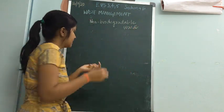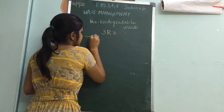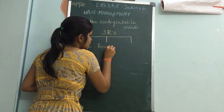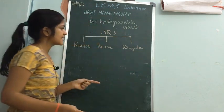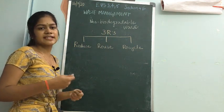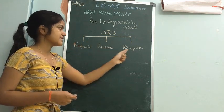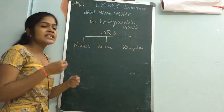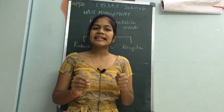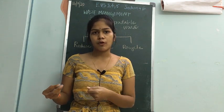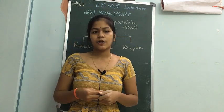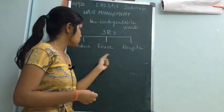For non-biodegradable waste, there are three R's: Reduce, Reuse, and Recycle. Non-biodegradable waste cannot easily mix into the soil and causes environmental pollution, so these three R's help manage it. Reduce means reducing the production and use of non-biodegradable waste. For example, instead of using polythene bags when shopping for groceries or fruits and vegetables, you can carry your own cotton bag or jute bag to reduce the use of polythene bags.